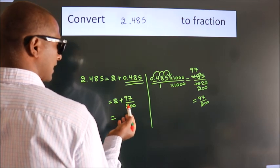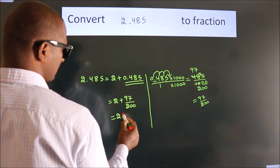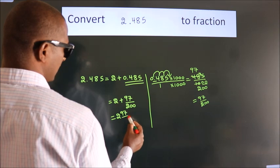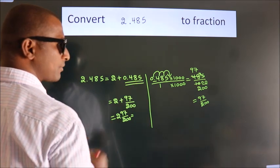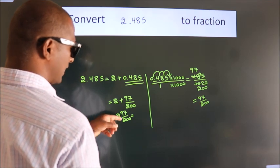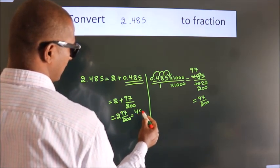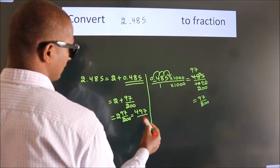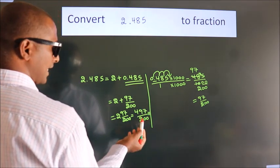2 plus 97 by 200. In mixed fraction it is 2 into 200, 400 plus 97. 497 by 200 is our fraction.